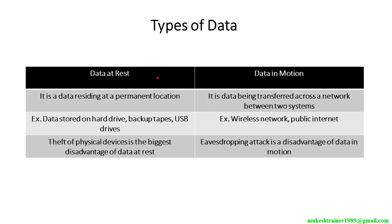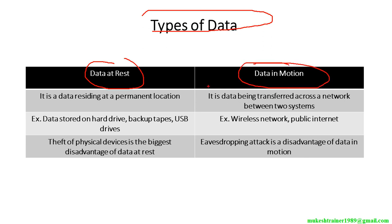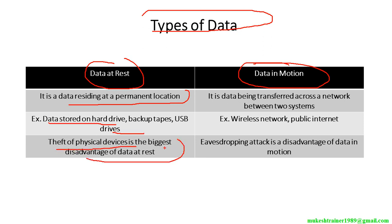We will be talking about types of data: data at rest and data in motion. Data at rest means data residing at a permanent location, saved in the hard drive. The theft of a physical device is the biggest disadvantage of data at rest — somebody could steal the hard drive or the server.